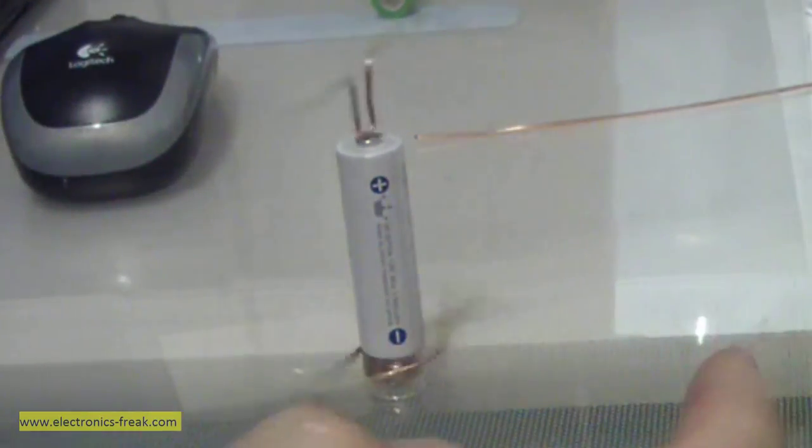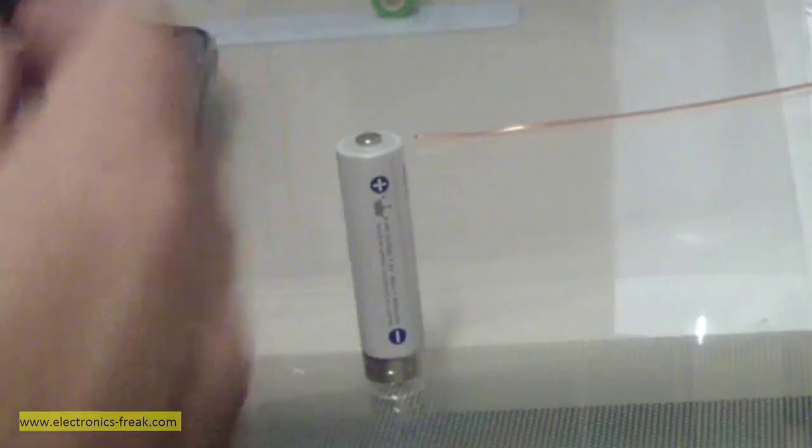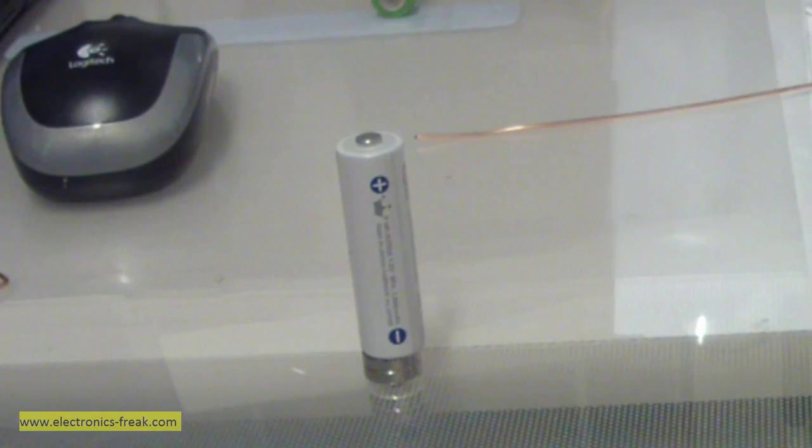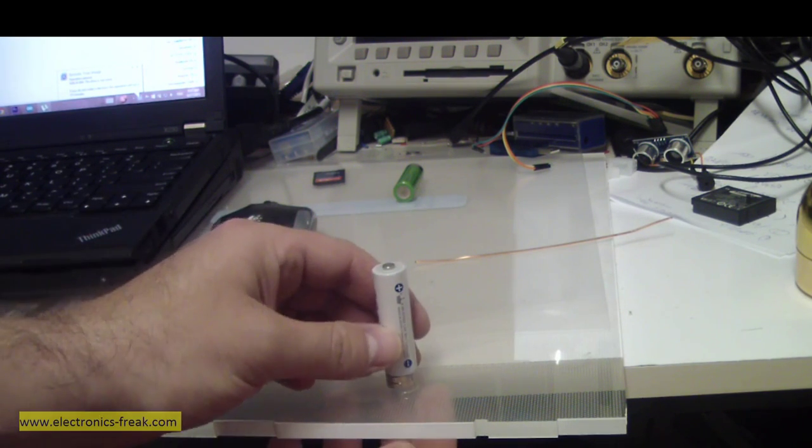Now we can see that it is spinning clockwise. And now if I want it to spin counterclockwise, what we need to do of course is to change the direction of the magnetic force. This is very simple.